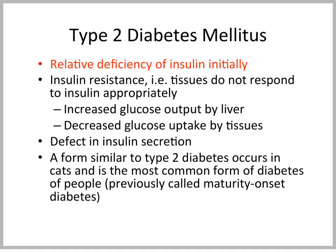Type 2 diabetes is different. This is the type mostly associated with obesity in people. Here we have usually, at least in the beginning, a relative deficiency of insulin, which can progress later to an absolute deficiency. In cats, what we usually see initially is already that their insulin is low. One of the hallmarks of type 2 diabetes mellitus is insulin resistance, primarily caused by obesity. Tissues do not respond to insulin appropriately, we have increased endogenous glucose output by the liver, decreased glucose uptake by tissues, leading to increased blood glucose, made worse by a defect in insulin secretion.